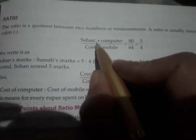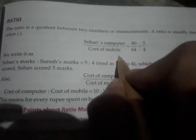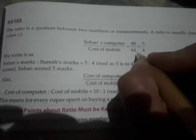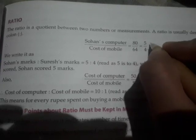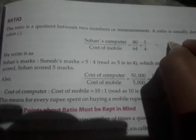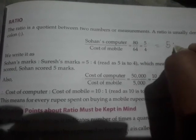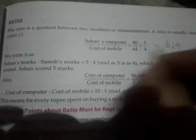For example, Sohan's computer, cost of mobile - 80 by 64 value. So when we simplify, we get 5 by 4, which is denoted as 5 ratio 4.